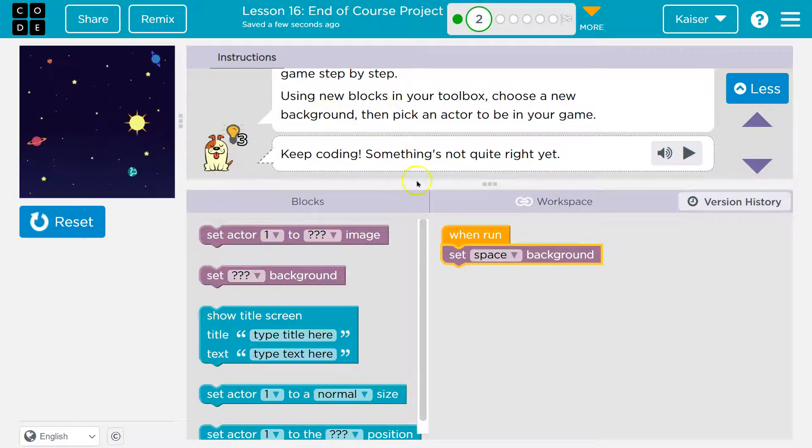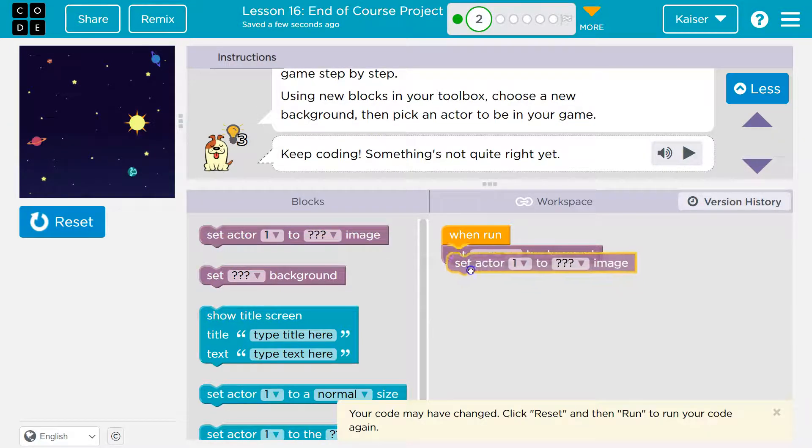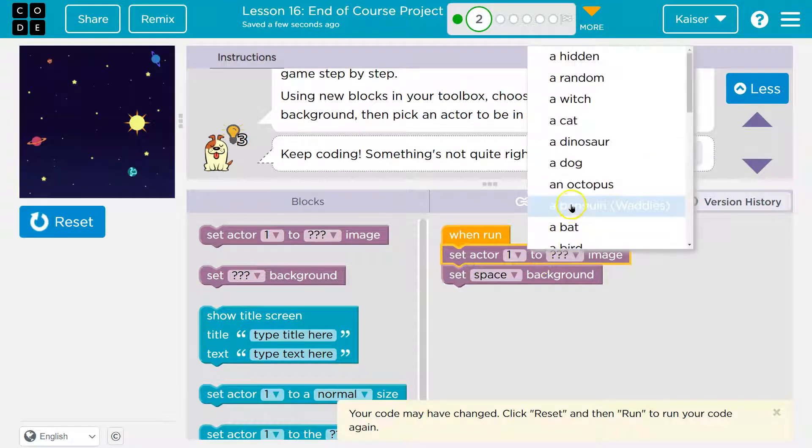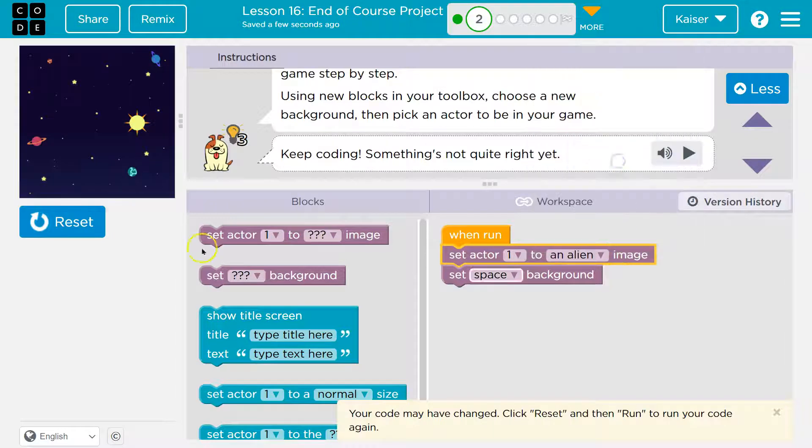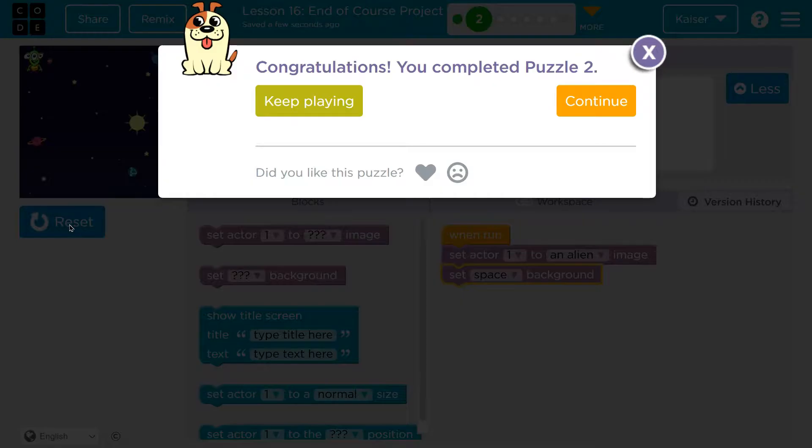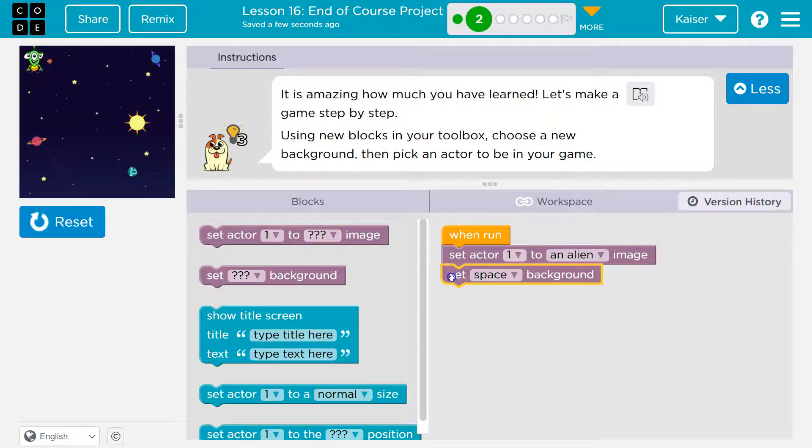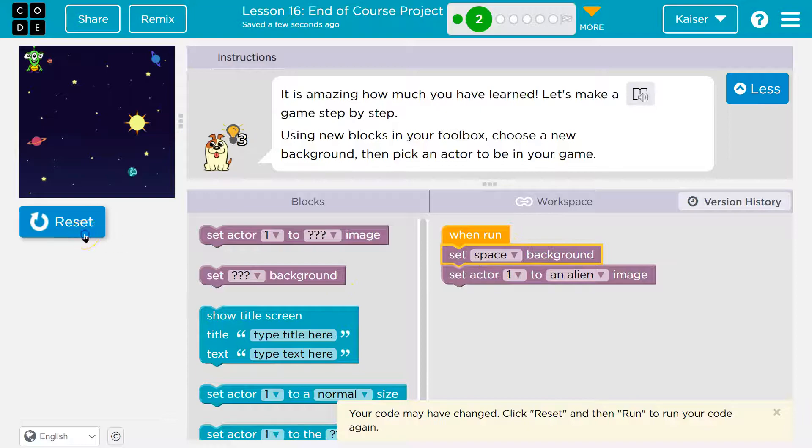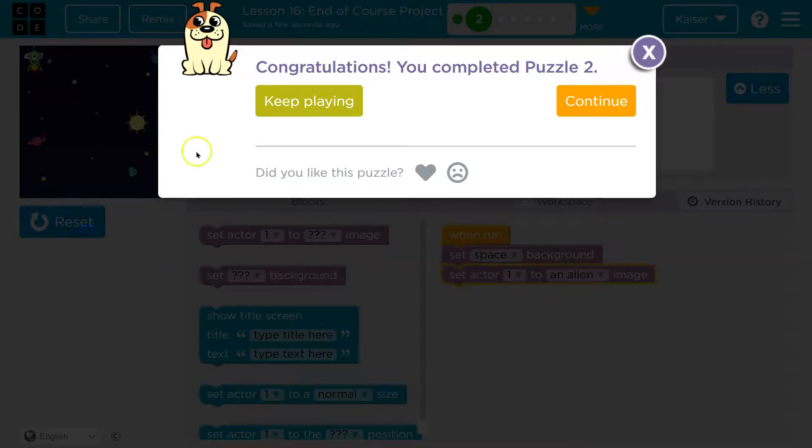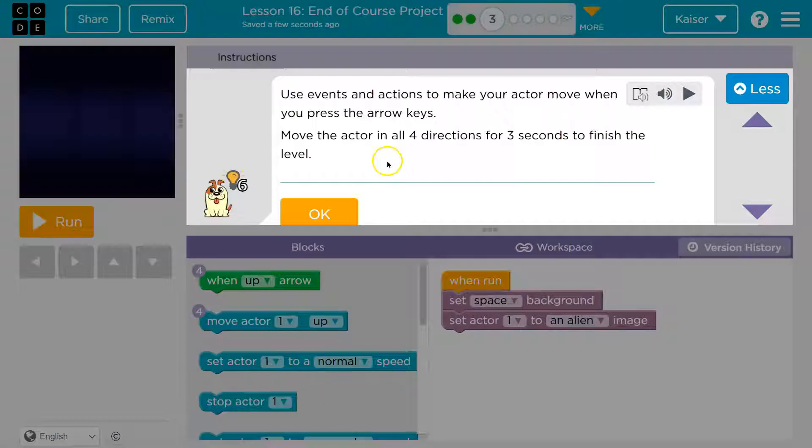Now using new blocks, then pick an actor in your game. Okay. So set actor. That's how we pick, right? And make sure you do the background first. Watch what happens. I'm going to do a random, an alien. But if I hit reset, run, keep playing. Oh, it's actually going to let me. Okay. So let's do a background first. It's good practice. It will show either way, but good practice. Boom and boom. We're all set. Let's keep going.